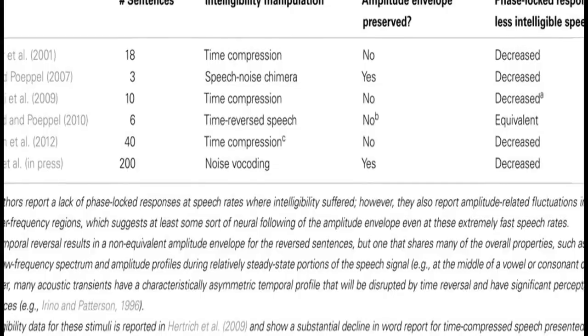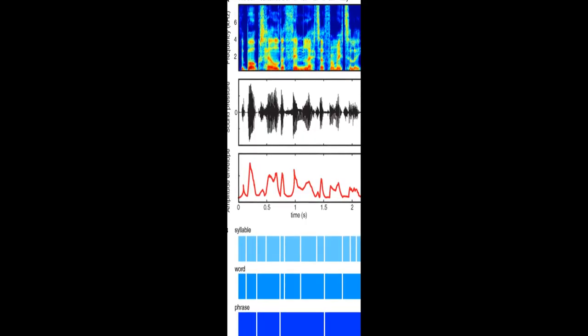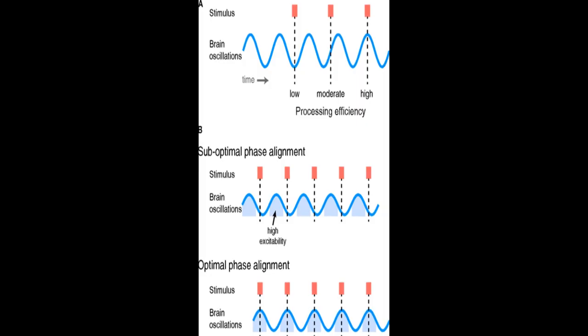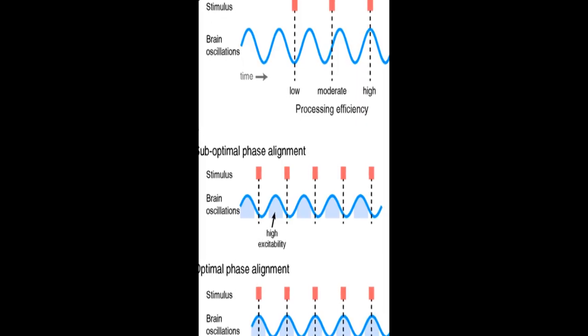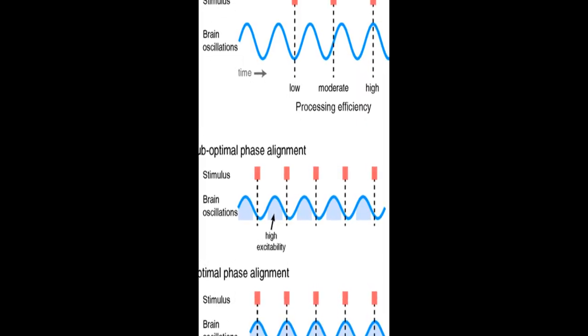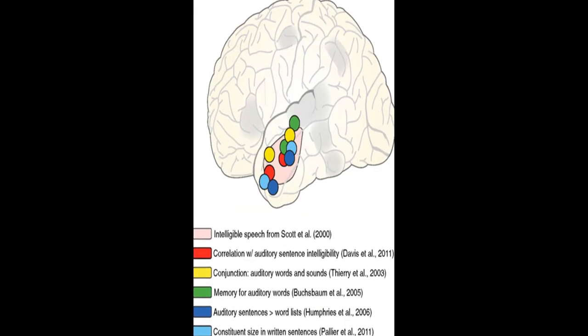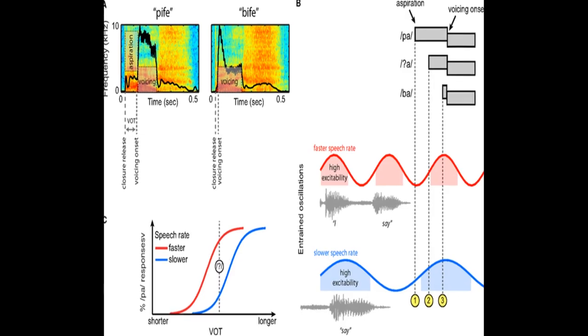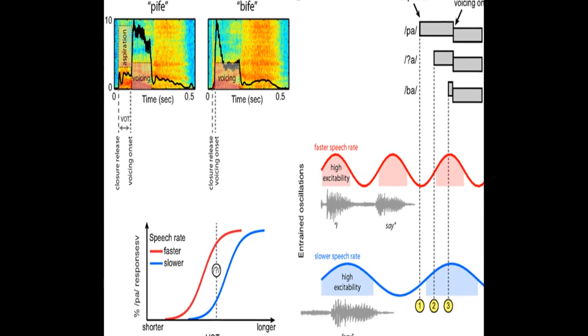Behavioral studies show that listeners rely on this information for speech intelligibility. Neuroimaging data suggests that phase locking by ongoing cortical oscillations to low-frequency information 4 to 8 Hz in the speech envelope helps encode a prediction of when important events are likely to occur, increasing sensitivity to relevant acoustic cues.